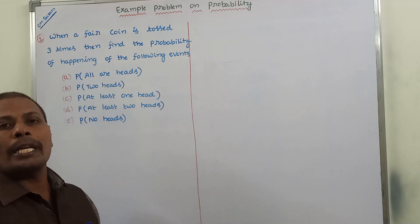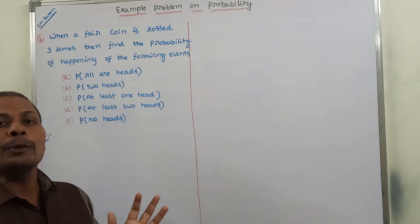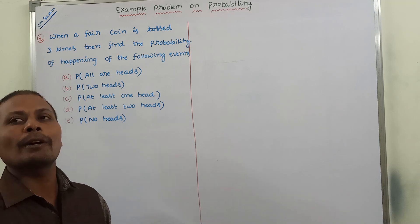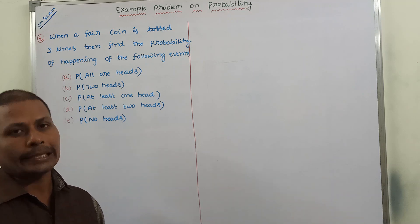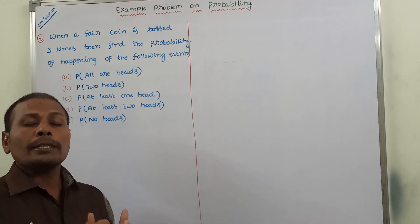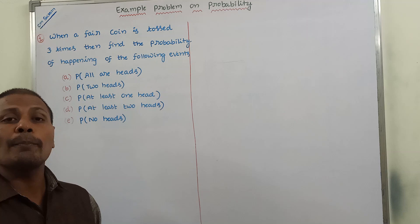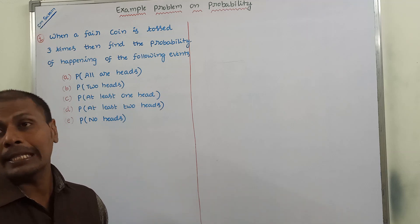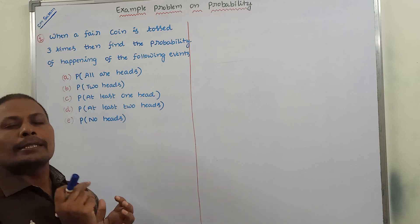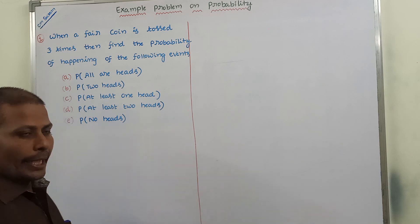When a fair coin is tossed, we get two possibilities — one is head and another one is tail. When a fair coin is tossed three times, how many number of possibilities do we get? Two power three, that is eight possibilities.